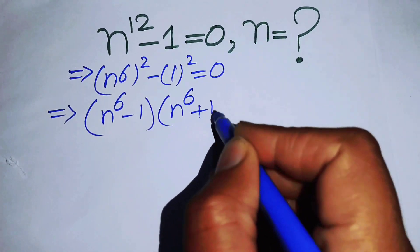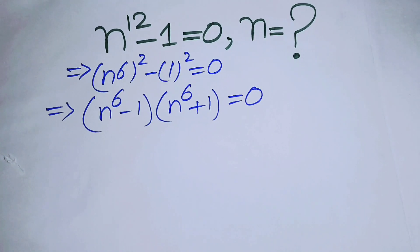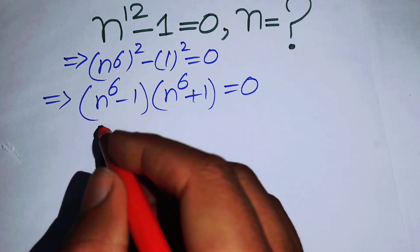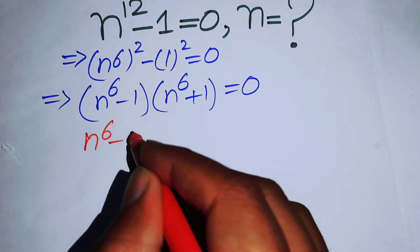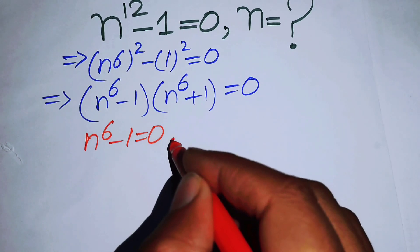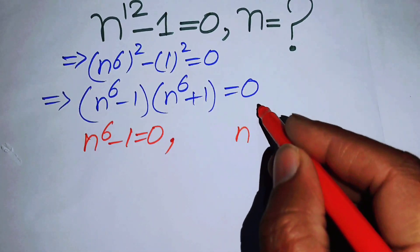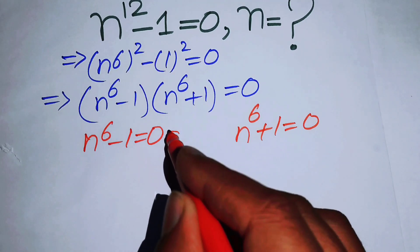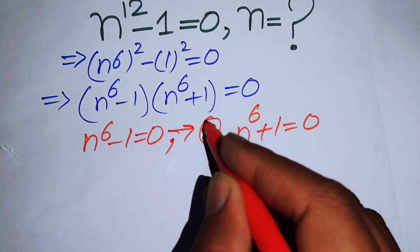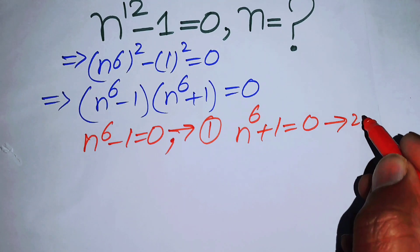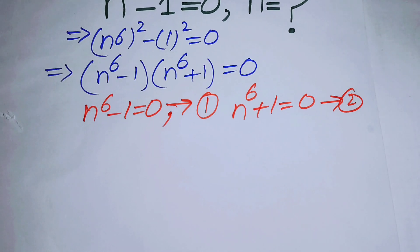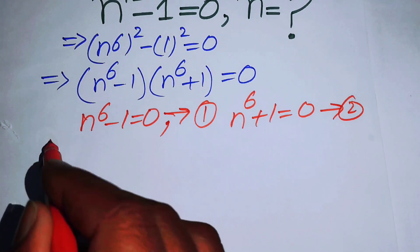Here we divide this into two cases. Case 1: n to the power of 6 minus 1 equals 0, which we call equation number 1. Case 2: n to the power of 6 plus 1 equals 0, which we call equation number 2. Now we solve these two equations.